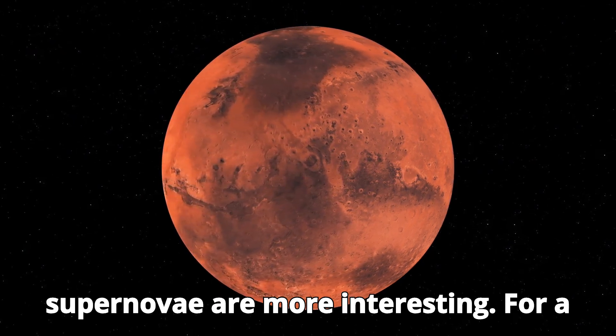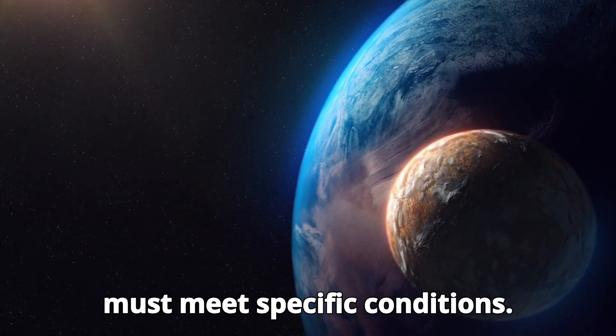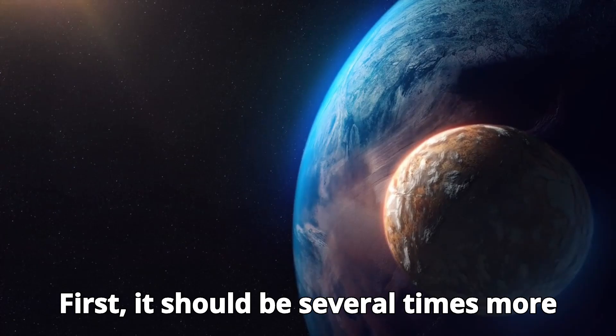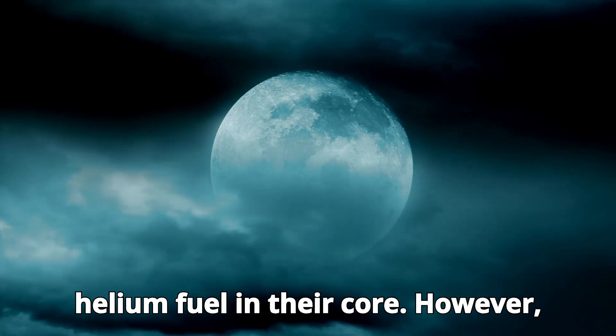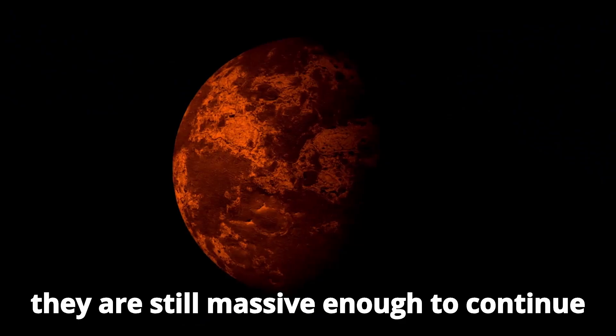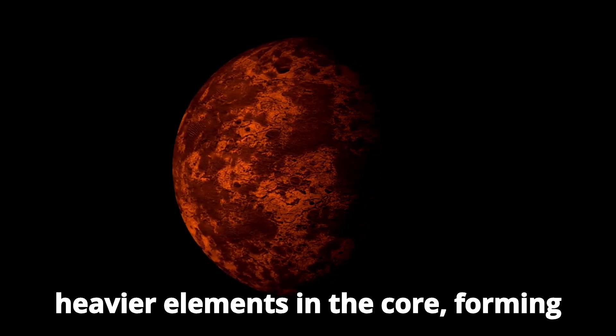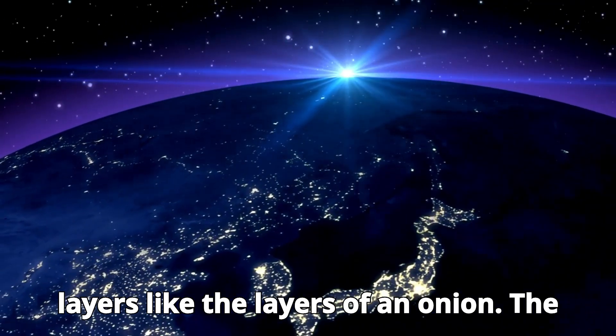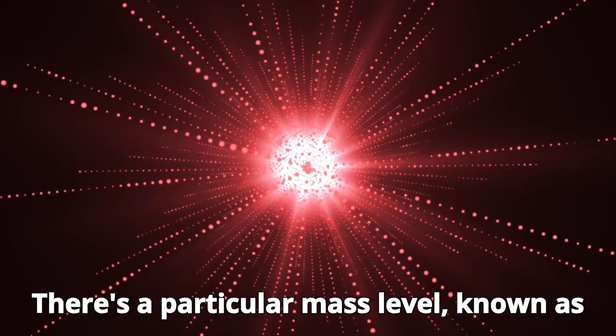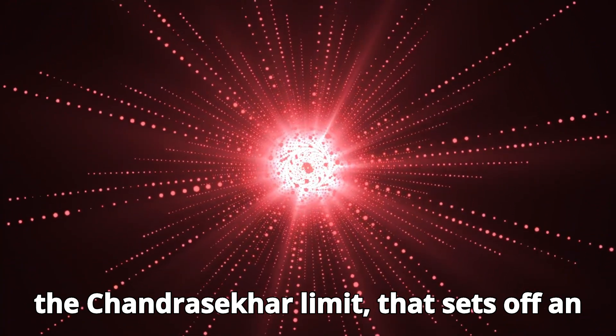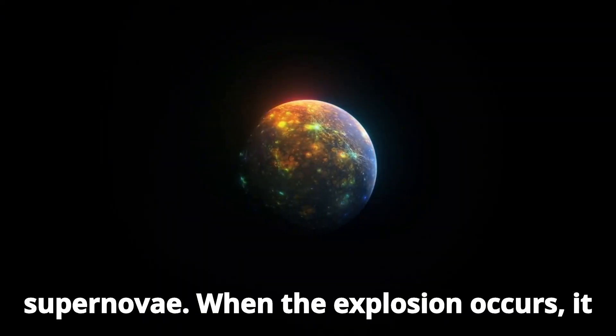On the other hand, type 2 supernovae are more interesting. For a star to become a type 2 supernova, it must meet specific conditions. First, it should be several times more massive than our sun. These stars eventually run out of hydrogen and then helium fuel in their core. However, they are still massive enough to continue fusing carbon and progressively gather heavier elements in the core, forming layers like the layers of an onion. The elements become lighter as we move towards the outer part of the star. There's a particular mass level, known as the Chandrasekhar limit, that sets off an explosion. That's why these type 2 supernovae are also called core collapse supernovae.